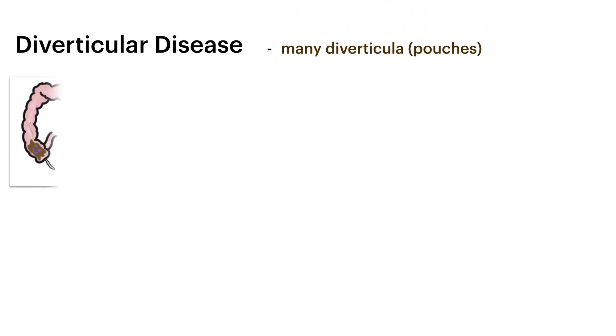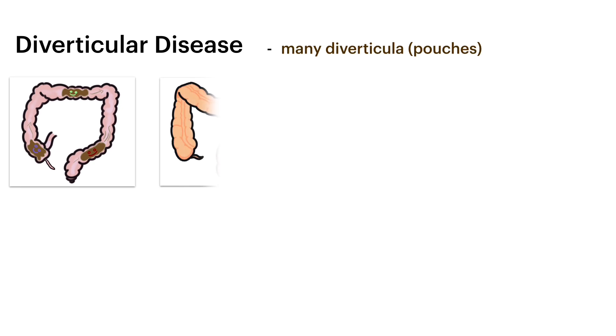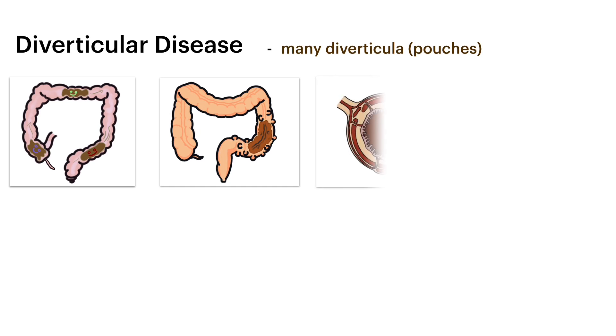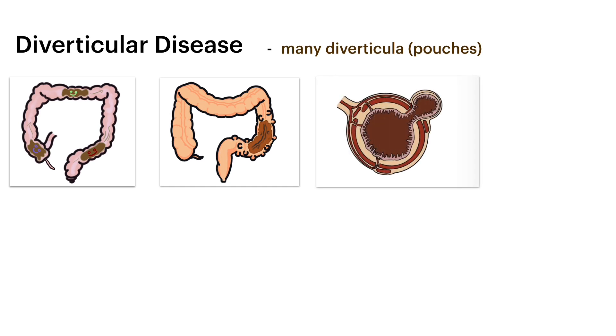First, let's get over some definitions. What is diverticular disease? Diverticular disease is a condition that affects the large intestine, where many diverticula form, primarily in the latter parts — the descending colon, the sigmoid colon, and the rectum. They are pouches that protrude out and cause trouble to the individual who has them.